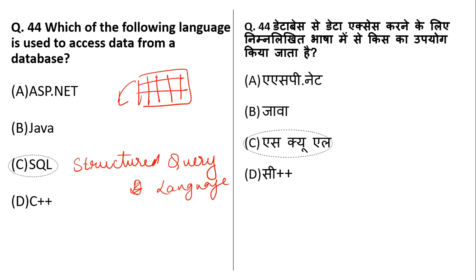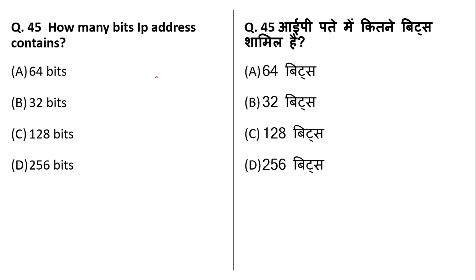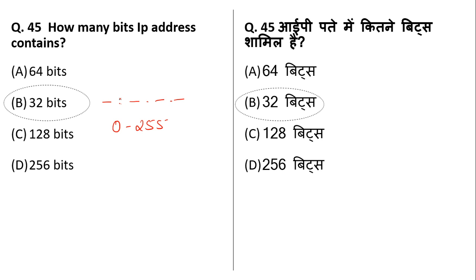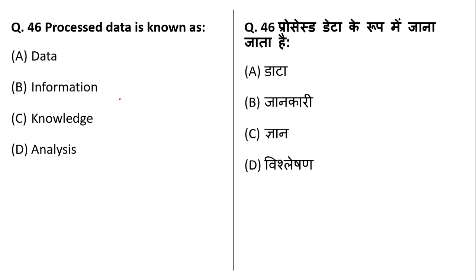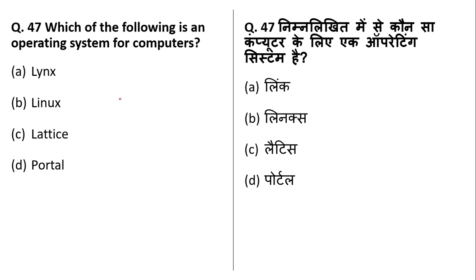An IP address — Internet Protocol address — consists of 32 bits. It has four numbers in the range 0 to 255 with dots in between, used to recognize computers or hardware on the network. After a computer has processed data, the result is known as information. Linux is a kind of operating system — none of the other provided options are operating systems.